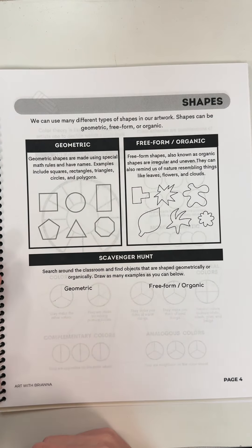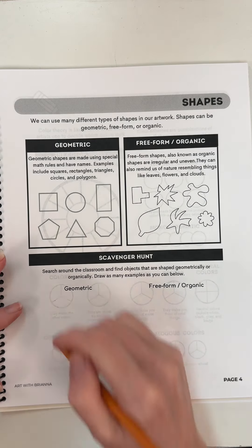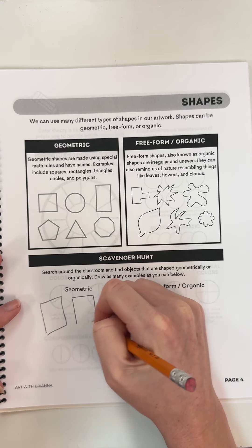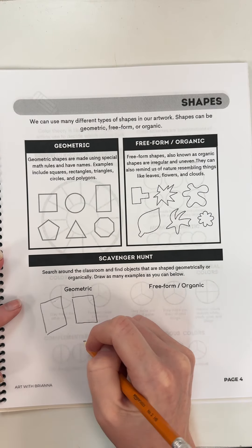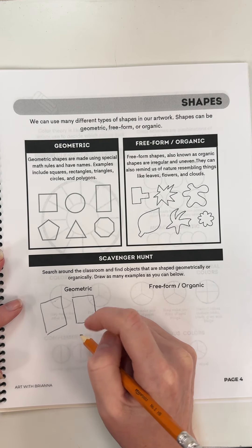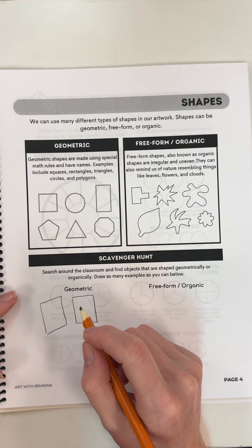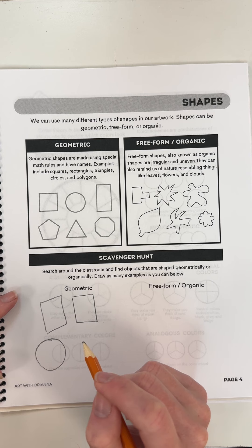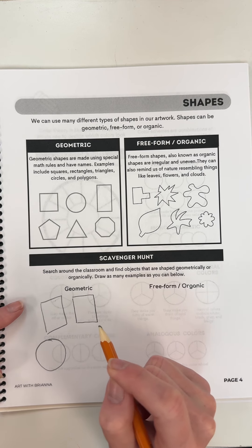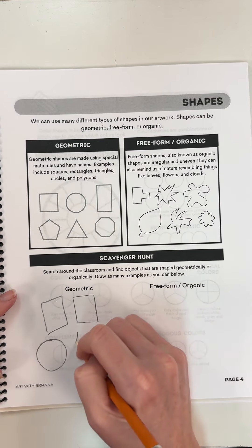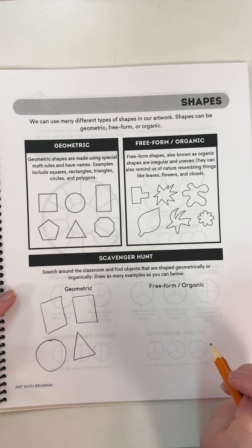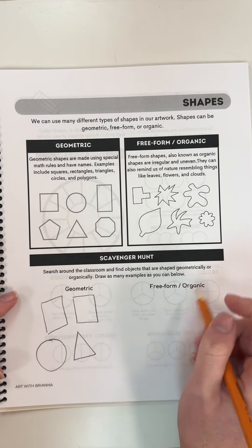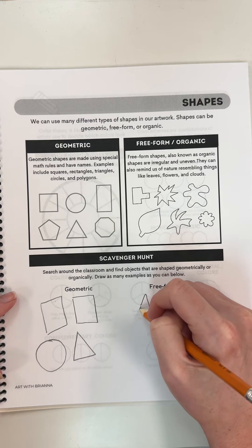Shapes can be geometric. Looking around my room right now, for example, I see some rectangles from the posters. I also see rectangle bricks on the walls. I can see a circle from a roll of tape. I also see a triangle because there's a little flag hanging on the board.